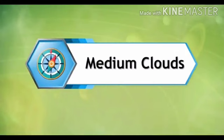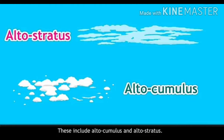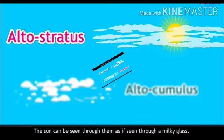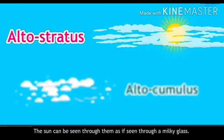Medium clouds include altocumulus and altostratus. Altocumulus clouds are in the form of layers and have a wave-like structure; they are mostly white in color with a gray shade. Altostratus clouds are not very thick — the sun can be seen through them as if seen through a milky glass.